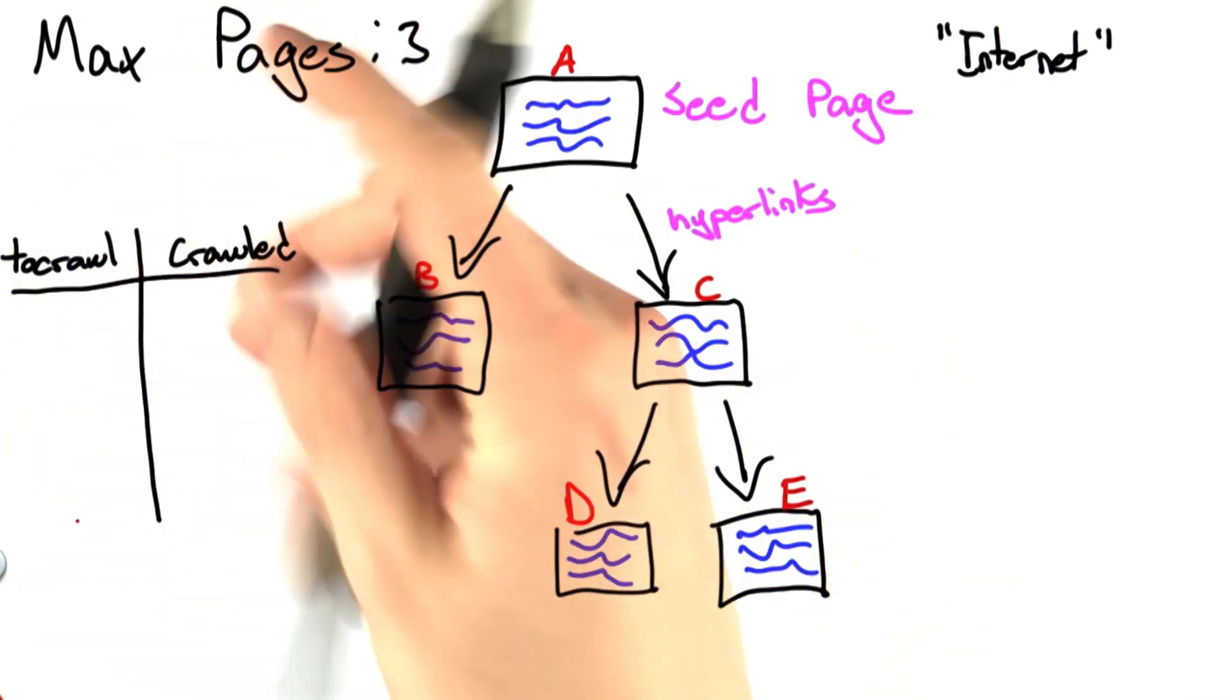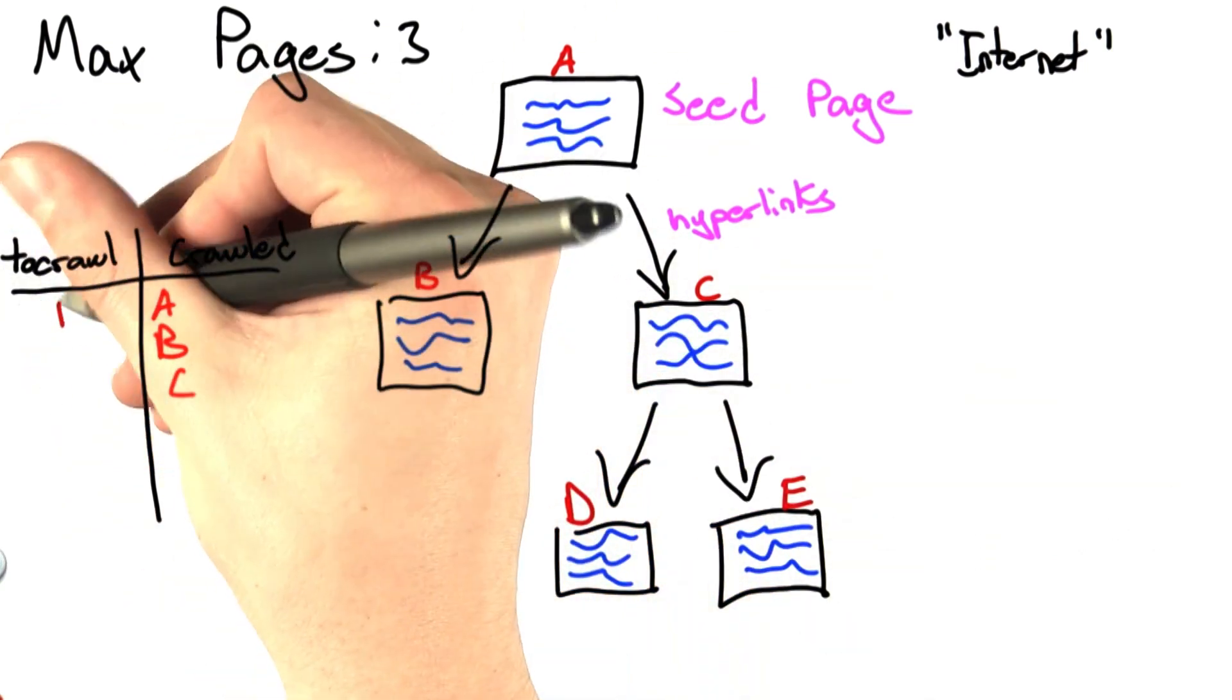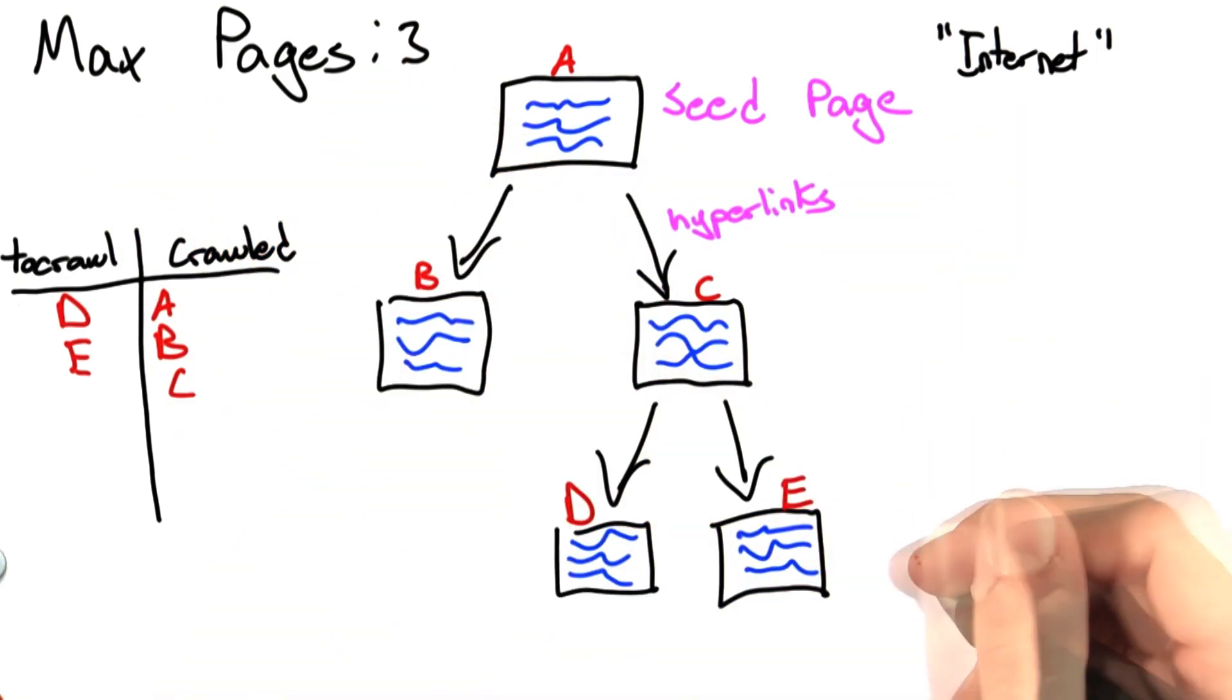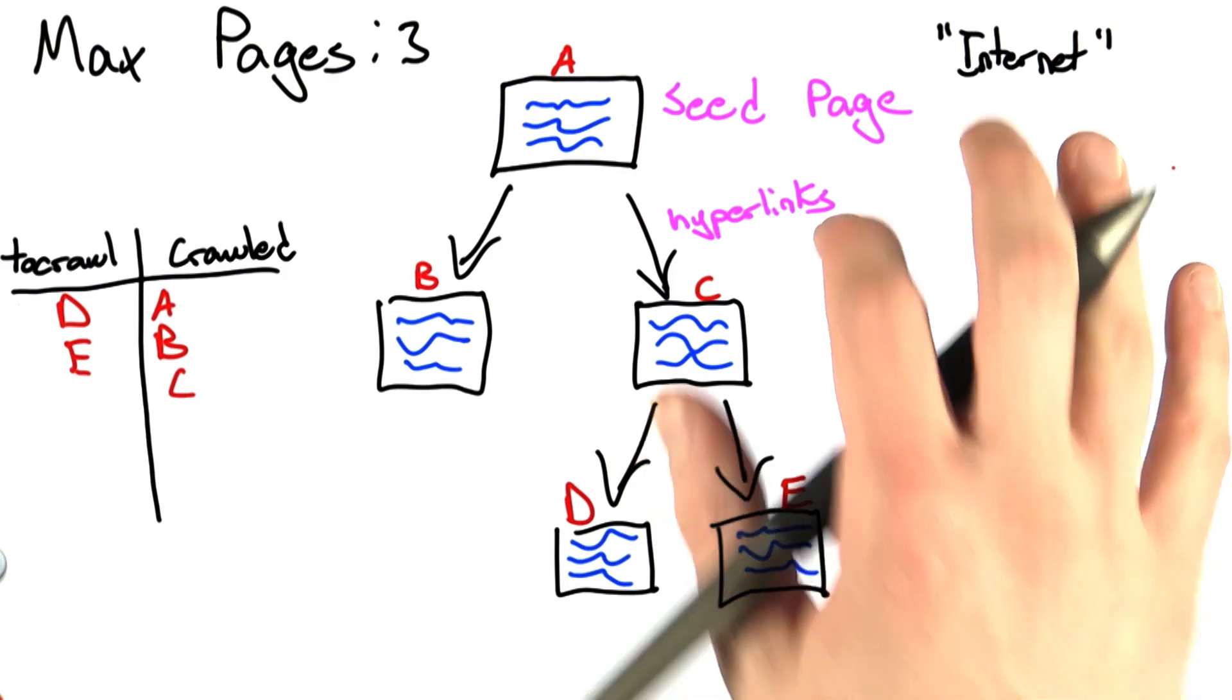we're going to crawl A and get B and C. Then we're going to crawl C and get D and E, but we now have crawled 3 pages, so we want to stop the process. Let's look at the code that we had at the end of the unit and modify it to do exactly this.